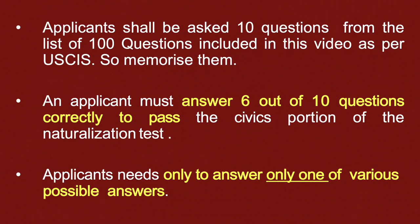This video will help you focus on specific answers, this time in random order. The civics test is an oral test and you will be asked up to 10 of the 100 questions. You must answer 6 out of the 10 questions correctly to pass the test. Remember there are 100 civics questions and answers for the US naturalization test. So let's get started.